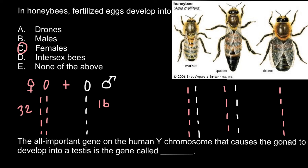The second question: the most important gene on the human Y chromosome that causes the gonad to develop into a testis is a gene called SRY — the sex-determination region on the Y chromosome. The product of this gene is a protein that binds to regulatory sequences on other chromosomes and upregulates production of the hormones that in turn determine maleness.